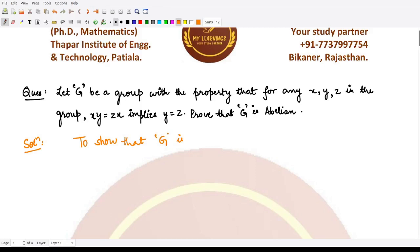What does it mean by Abelian? That means we will prove that for any two elements a and b which are taken from G, we have to prove that ab is equal to ba. So let's see how we can prove this thing.